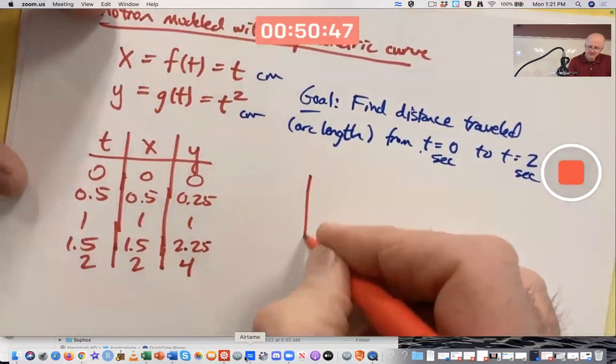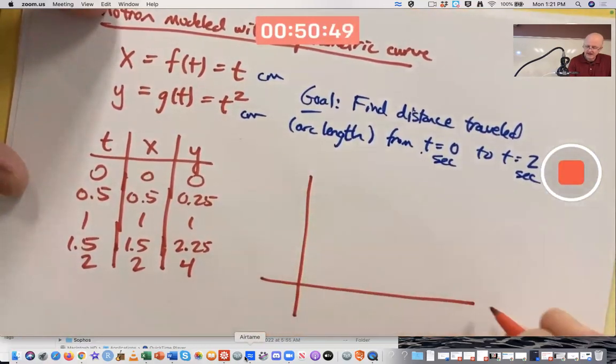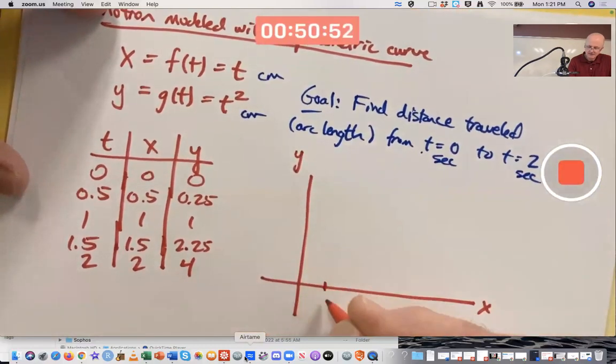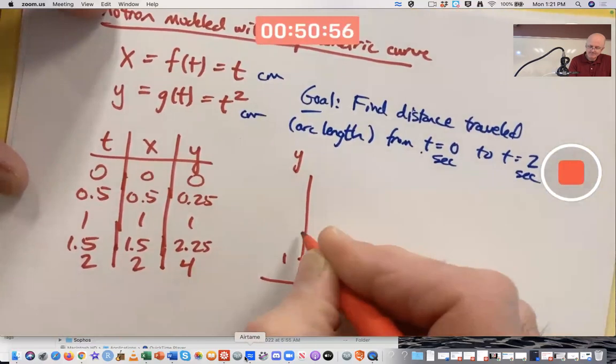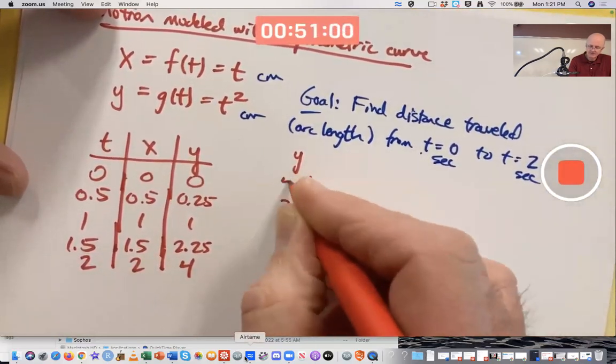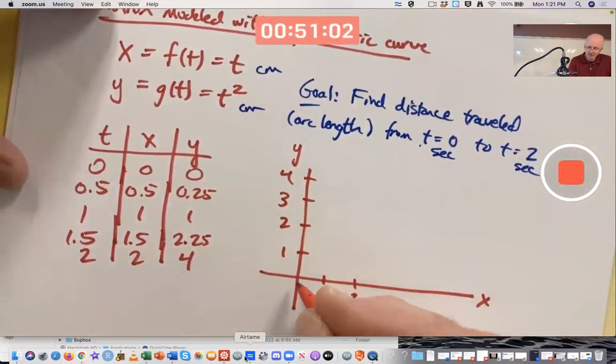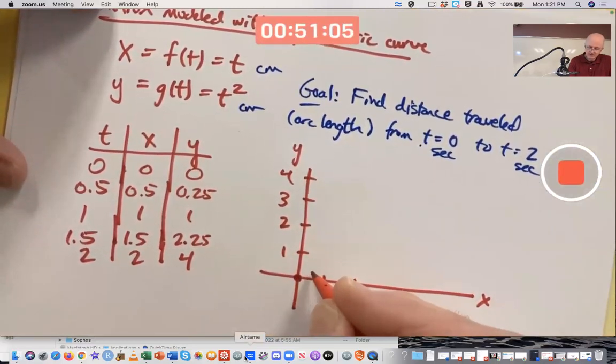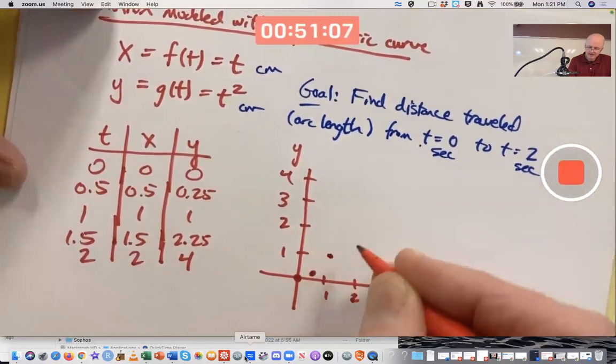So if we graph this now in an x, y plane, trying to make the scales of the axes approximately the same so that it's an accurate representation of the motion, plot these points, your picture is going to look about like this.